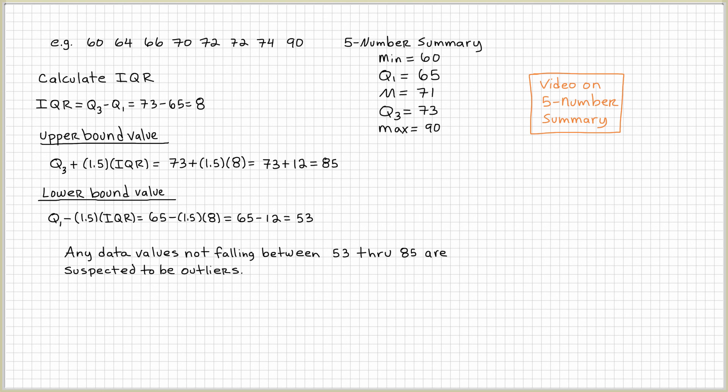Any data values not falling between 53 through 85 are suspected to be outliers. Between 53 through 85, any data points that go in there, we don't consider them outliers. Any data values that go outside, below 53 or above 85, are considered outliers. In this data set, do you consider any points to be outliers? That's right, 90. 90 is a possible outlier.